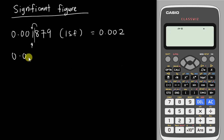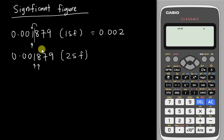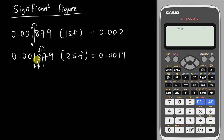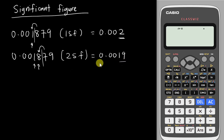For the same number 0.001879 rounded to 2 Significant Figures: I ignore all the zeros at the front, count the first digit, then the second digit, and draw a line. The next digit is 7, which is 5 or bigger than 5, so I add 1 to the front. 8 plus 1 is 9, so I get 0.0019, ignoring all the numbers behind.